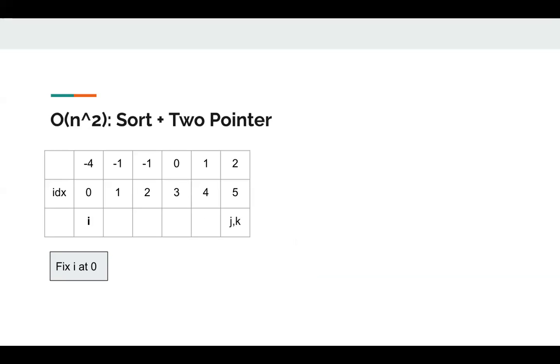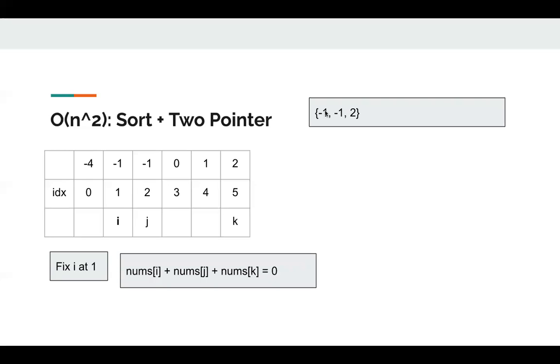Now j and k meet. So we can stop. We fix i at one and we reset j and k. Now nums[i] + nums[j] + nums[k] is zero. We find a valid triplet. So we add negative one, negative one, two to our answer.